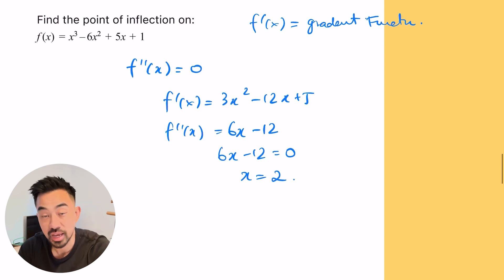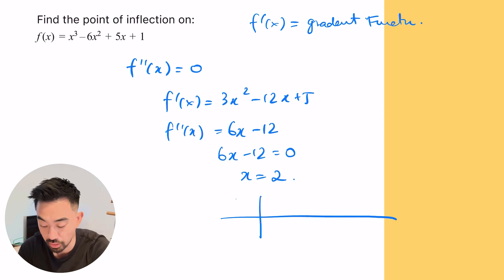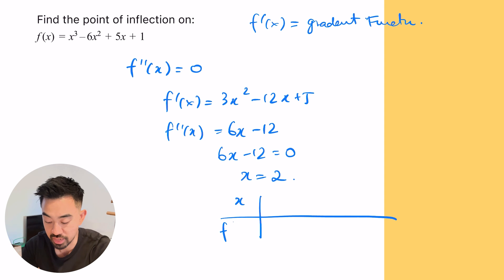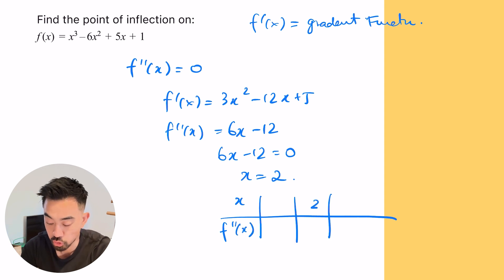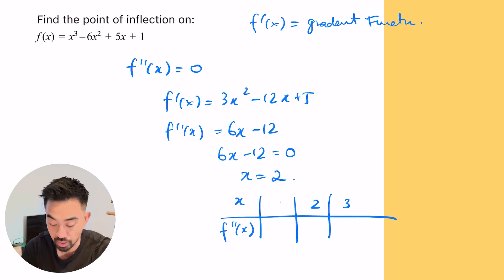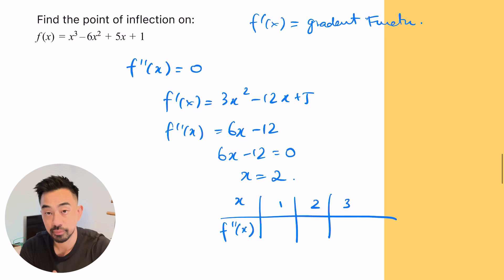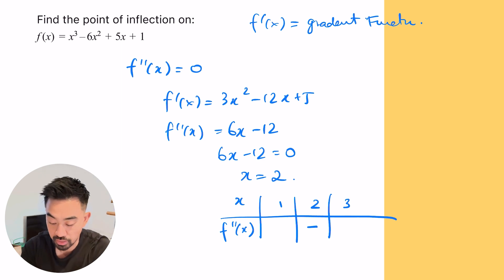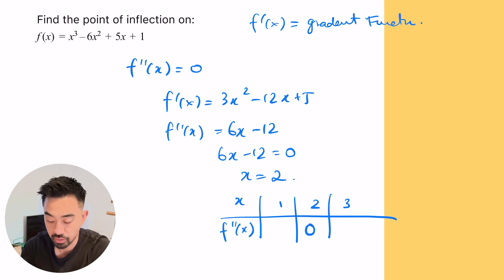Now we need to test whether or not this is actually a point of inflection. We do this similar to the previous video where we used a table — we put x and then f double dash. We'll stick two in the middle and choose a number on either side: three and one. We put a zero here for x equals two.